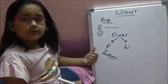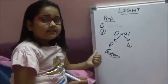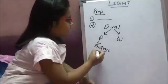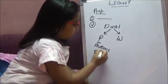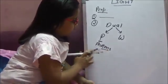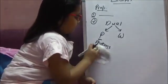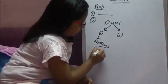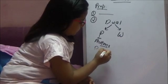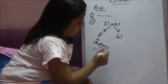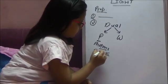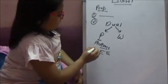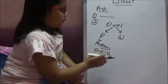The particle nature of light was given by Sir Isaac Newton. Sir Albert Einstein took its benefit and explained the photoelectric effect, and he got a Nobel Prize for it.